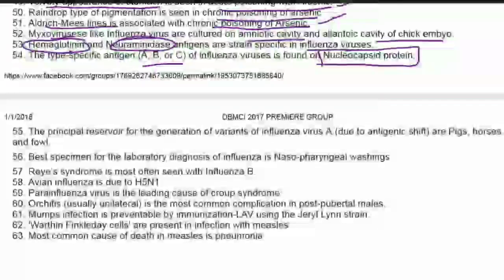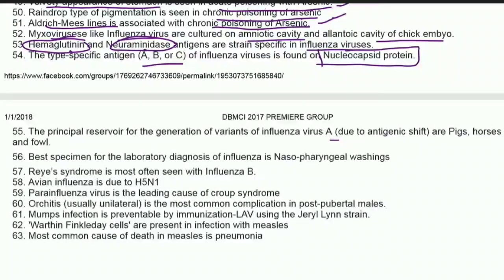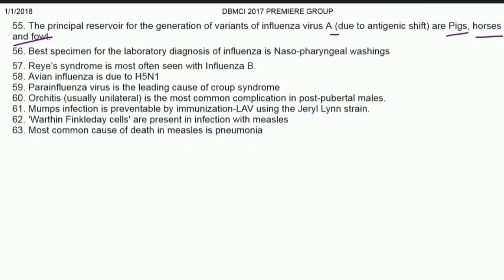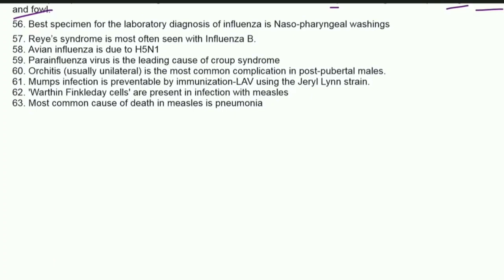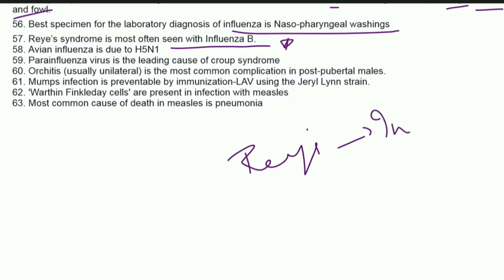The principal reservoir for the generation of variants of influenza virus A due to antigenic shifts are pigs, horses, and fowl. The best specimen for laboratory diagnosis of influenza is nasopharyngeal washings. Reye's syndrome is most often seen with influenza B.